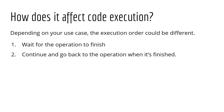How does it affect code execution? Depending on your case, the execution can take two forms. One: you have to wait for the operation to finish. Two: you continue and go back to the operation when it is finished. For example, if you are making French toast and you don't have eggs, you ask your friend to go buy some. In the meantime, you could wait for your friend to come back and then continue cooking, or you can prepare the oil, prepare the toast, and so on. So either you wait for the operation to finish and then continue, or you continue your work while the operation is ongoing.